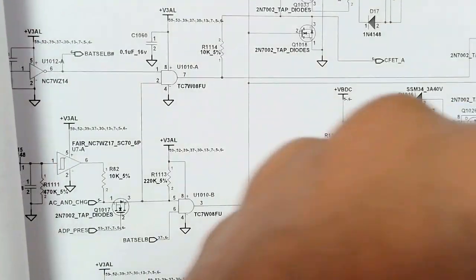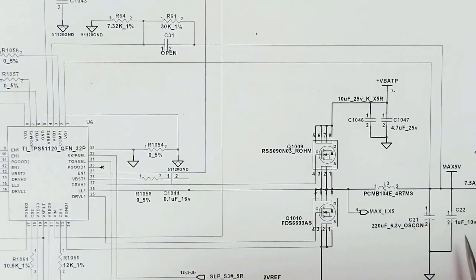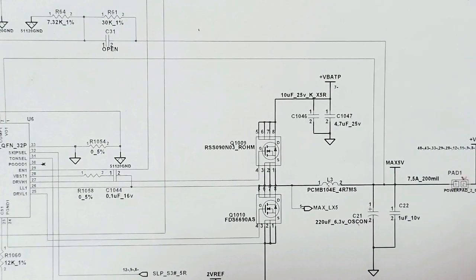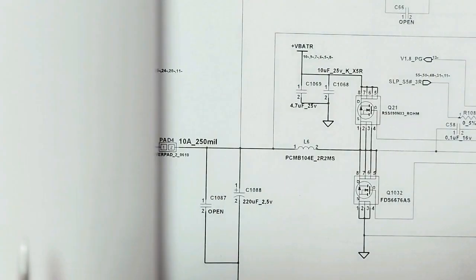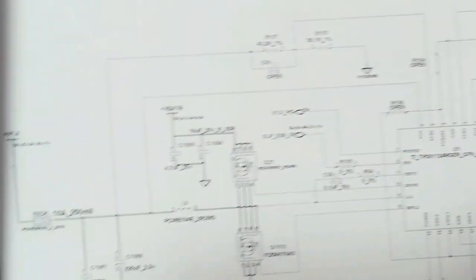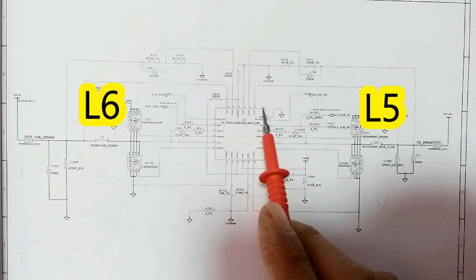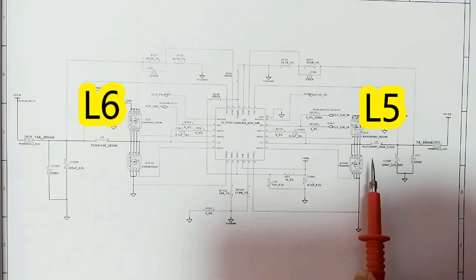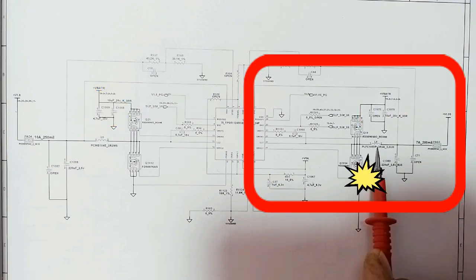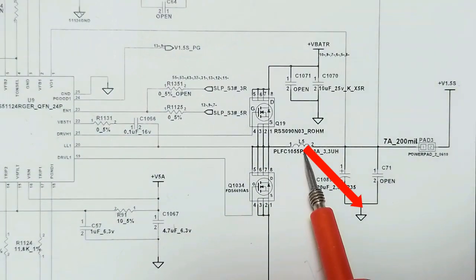I'm going to show you these inductors in the circuit diagram. Let's find L5 in the circuit diagram. Here we have L4, and here we have L3 in this channel for plus 5 volts. Here we go — we have L5 here, and here we have L6. This is the circuit where we have the short circuit. We found that this inductor is connected directly to ground, which means we have the short circuit in this channel.